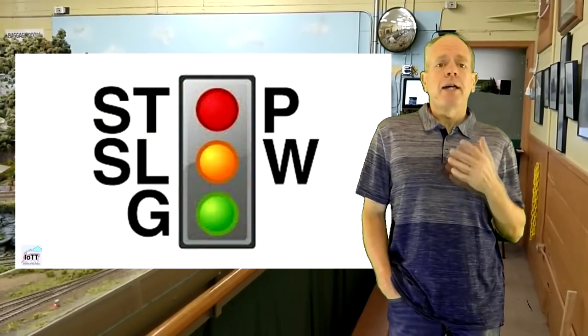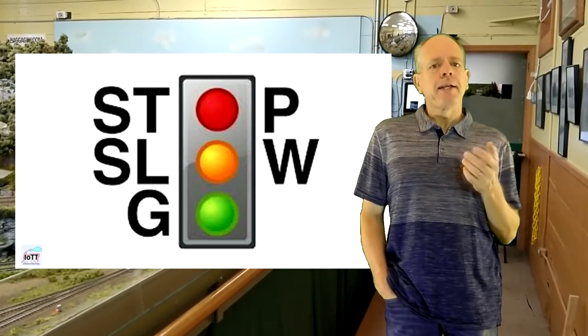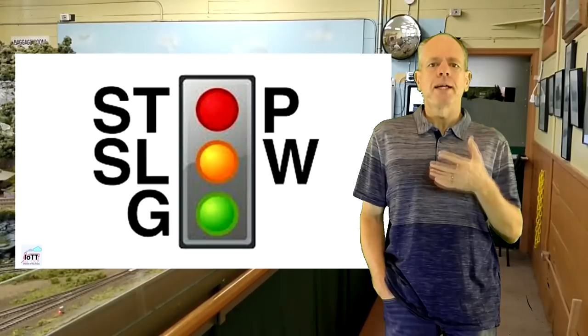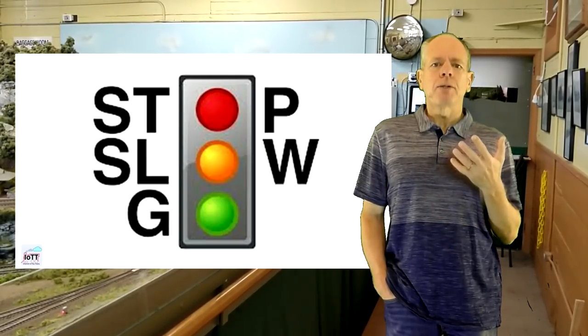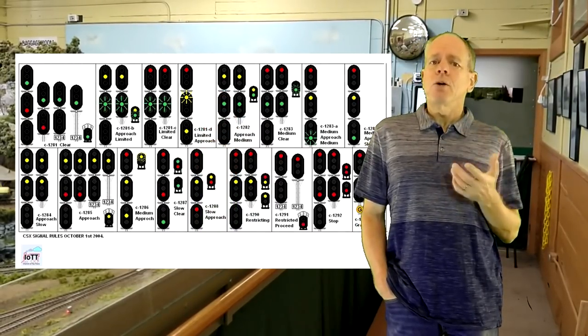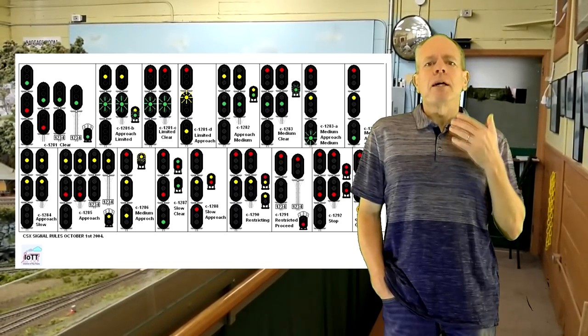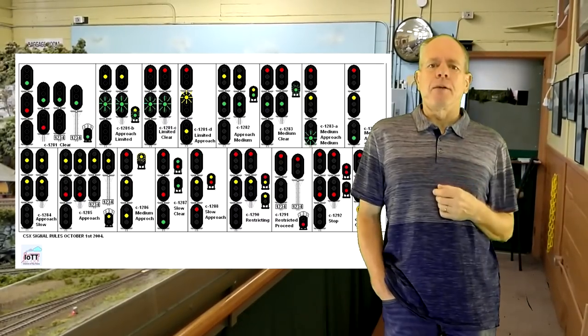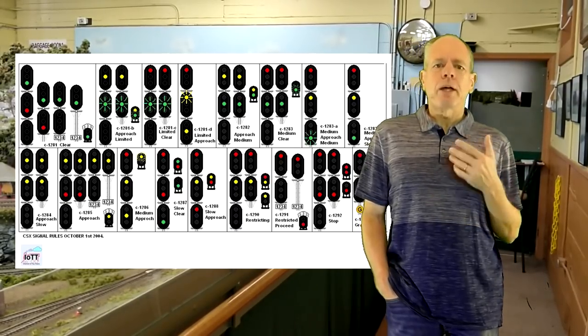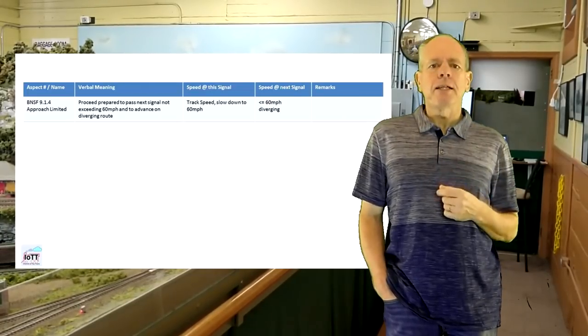Besides those two conceptual differences, there is also a technical difference many people are not aware of and that is the informational content of signal aspects. In road traffic, a traffic light indicates a permission to use the road or lane right at the location of the signal. Again, this is possible because the motorist is able to bring his vehicle to a stop from the moment he can see the signal until the moment he is about to cross the stopping line. Because this is impossible for a train engineer, railroad signals do not primarily indicate the speed at the location of the signal, but a certain braking distance after the signal. Typically, this will be the speed at the location of the next signal. The speed at the location of the current signal should basically be old news, because it has been signaled at the previous signal.